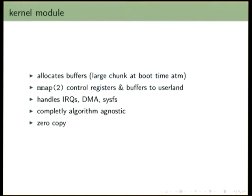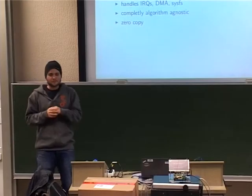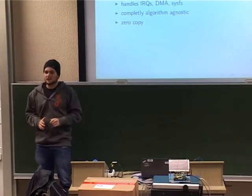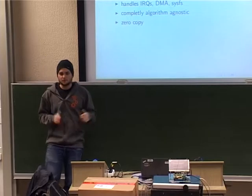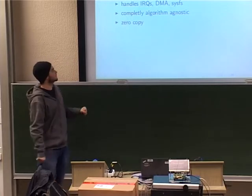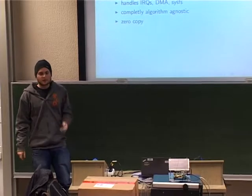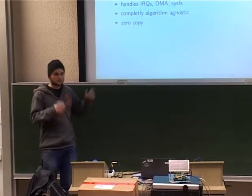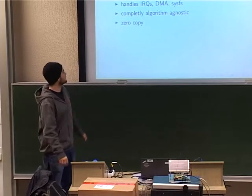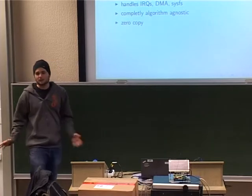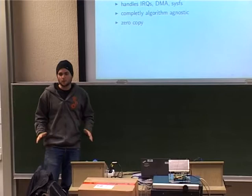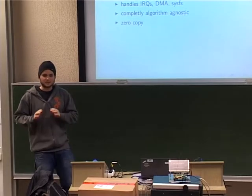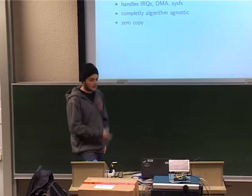A few words about the kernel module: it's a really slim layer, basically. It allocates buffers. It doesn't do scatter-gather, so it just grabs a bunch of memory at boot time and maps it to user land. We map the control registers to user land, and it handles IRQs and all the kind of stuff you don't want to deal with. It's completely agnostic of the algorithm — it doesn't care what your accelerator does, it basically just moves data. And it does zero copy.